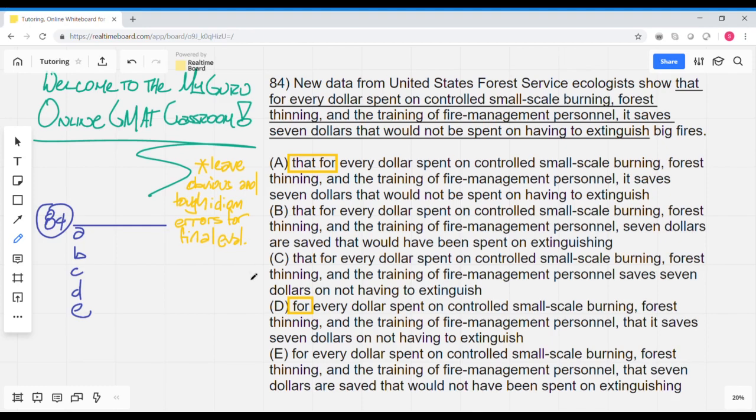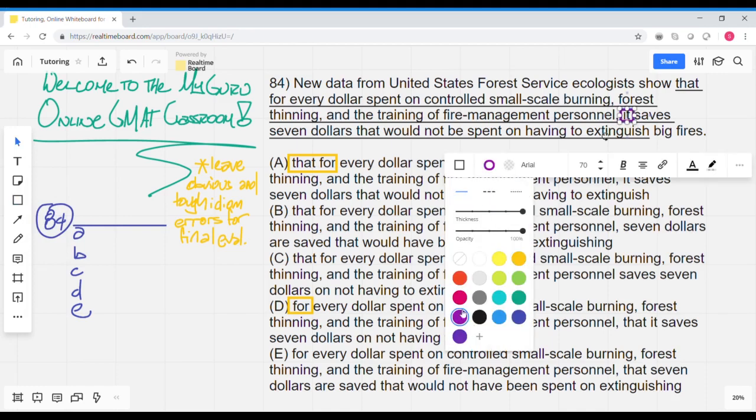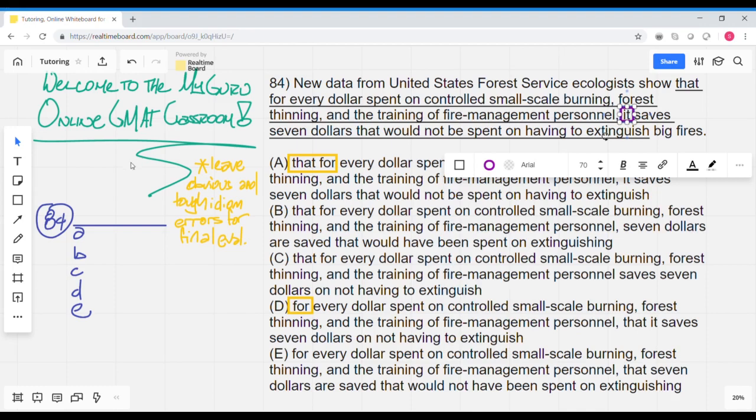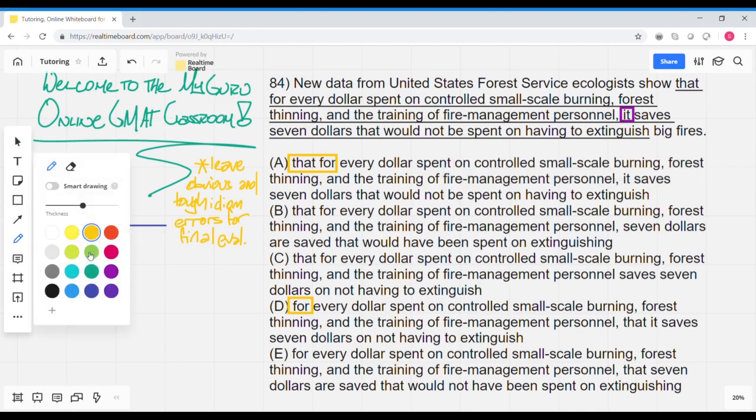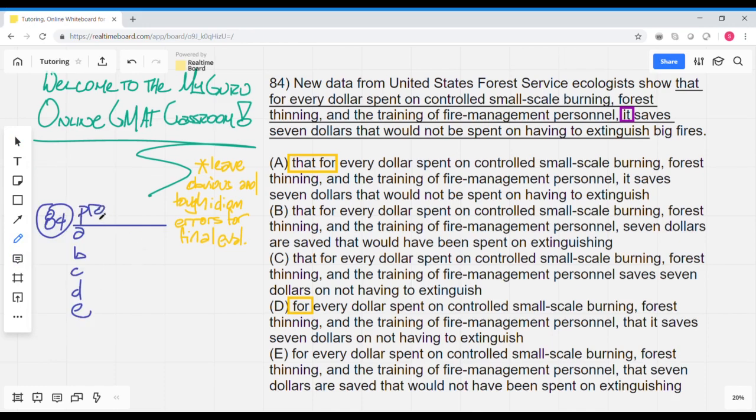Now, there's one simple word in there that I can immediately identify as ambiguous, and it's going to be this little it here right before saves. So this it is a clearly ambiguous pronoun and a much easier item to evaluate. So we're just going to go ahead and label this out as a pronoun issue, and that allows us to eliminate A, and then we just go look for other pronouns that may be ambiguous throughout the answer choices.